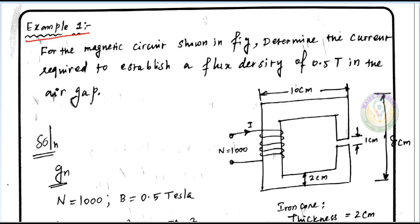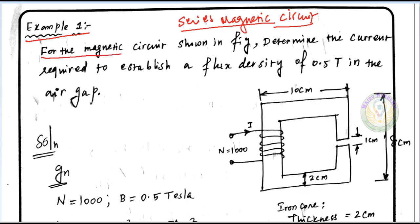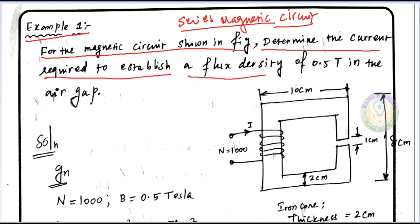This is a type of example — a series magnetic circuit example. For a magnetic circuit shown in the figure, determine the current required to establish a flux density of 0.5 tesla in the air gap.